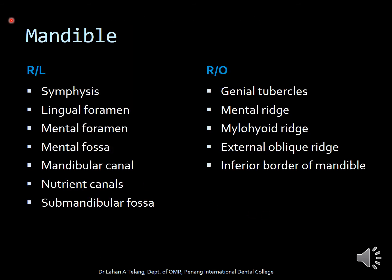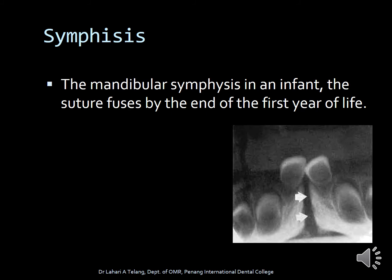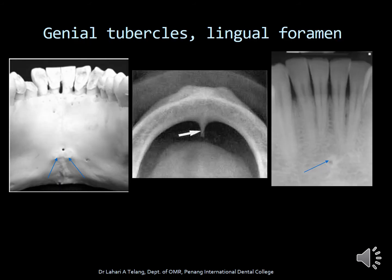The mandible also has important radiolucent and radiopaque anatomical landmarks. The symphysis is generally only seen in infants — it is the suture that fuses at the end of the first year of life. The genial tubercles are a radiopaque structure seen on the lingual surface of the mandible. A prominent genial tubercle is seen in an edentulous arch, and the lingual foramen seen here is evident in only a certain portion of the population, not everyone.